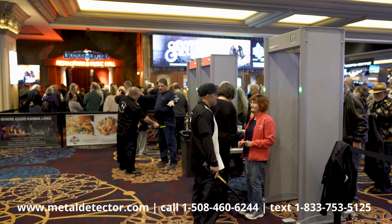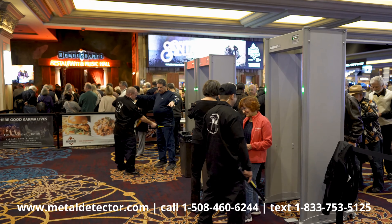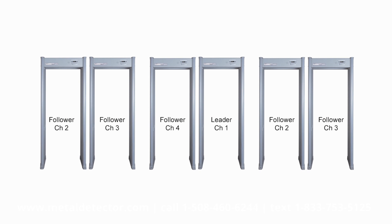For large installations, the walkthrough detectors should be organized into one or more clusters. Each cluster will consist of one leader and multiple followers. It is recommended that a follower unit be placed within 50 feet of its leader unit. Checkpoints spanning greater distances may require multiple clusters. Use frequency offsets and a minimum distance of 10 feet between clusters to ensure proper operation.